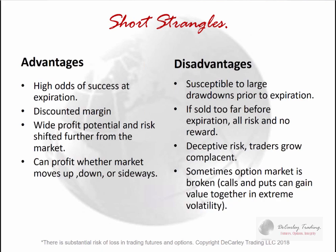The advantages of short strangles: they provide high odds of success at expiration, but at any time before expiration they can be susceptible to large drawdowns. They offer discounted margins, but if you sell them too far before expiration, it's all risk and no reward — options lose most of their value in the last month to month and a half. The great thing about a short strangle is you can make money whether the market goes up, down, or sideways. Your only risk is if it moves dramatically in either direction.